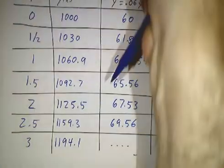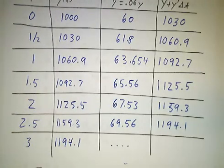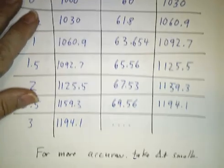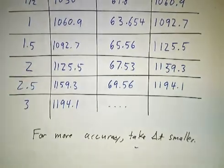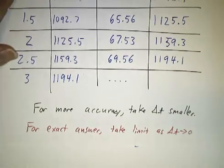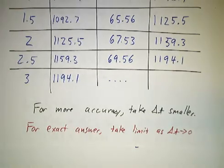If you want a decent answer, use step sizes of one. If you want a better answer, use step sizes of a half. If you want an even better answer, use step sizes of a tenth. If you want an exact answer, take the limit as the step size gets smaller and smaller and smaller. So that's this example.